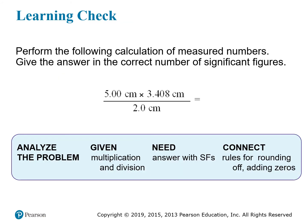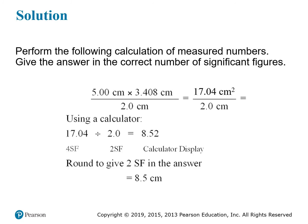Let's do another example. Here we have 3 measured numbers being multiplied or divided. Take a minute to figure it out before we look at the correct answer. In this example, the denominator has the fewest significant figures with only 2, so our answer should have only 2 significant figures as well. The calculator will display 8.52, which we then have to round down to 8.5.